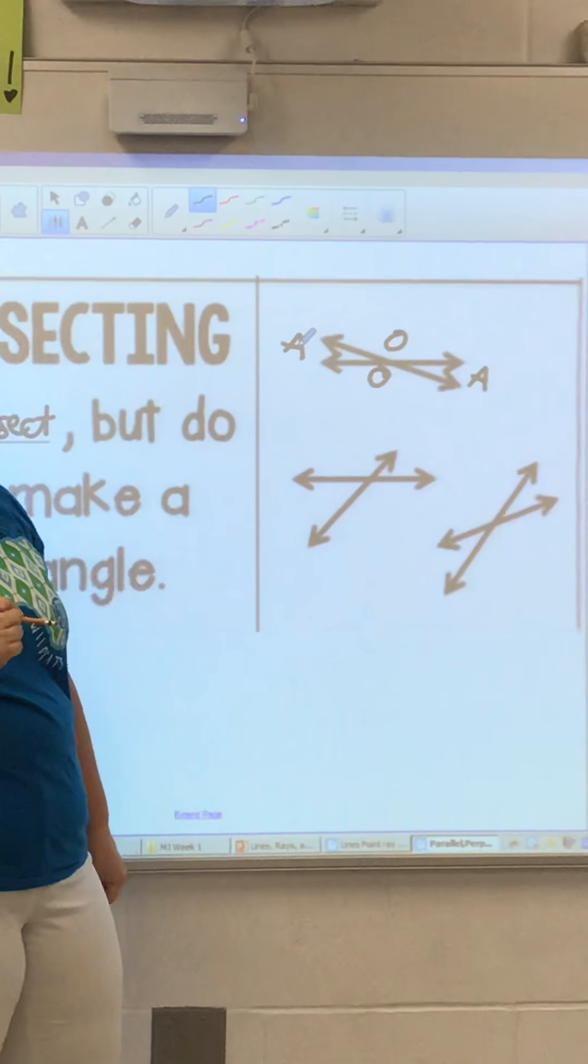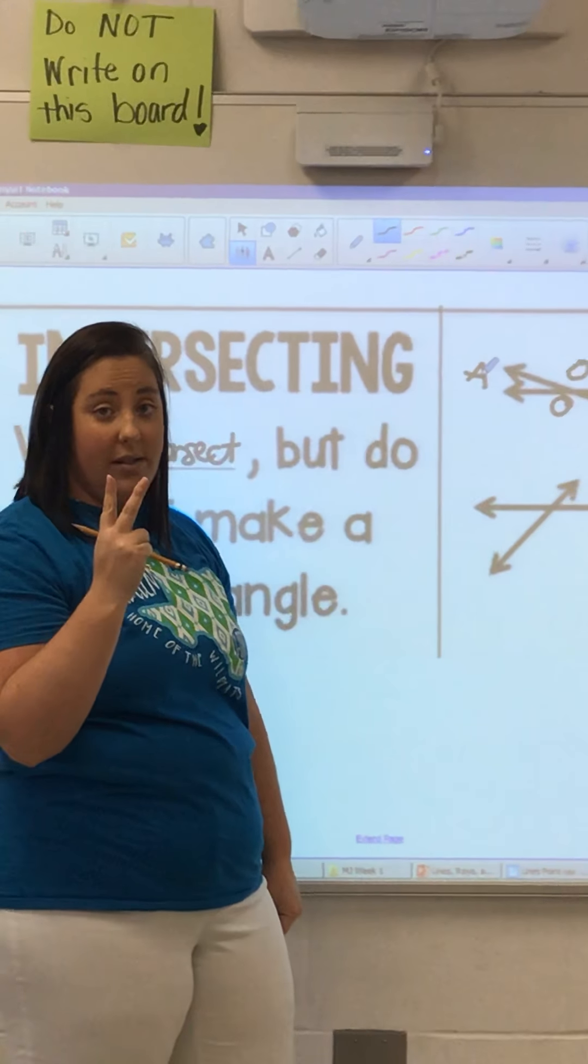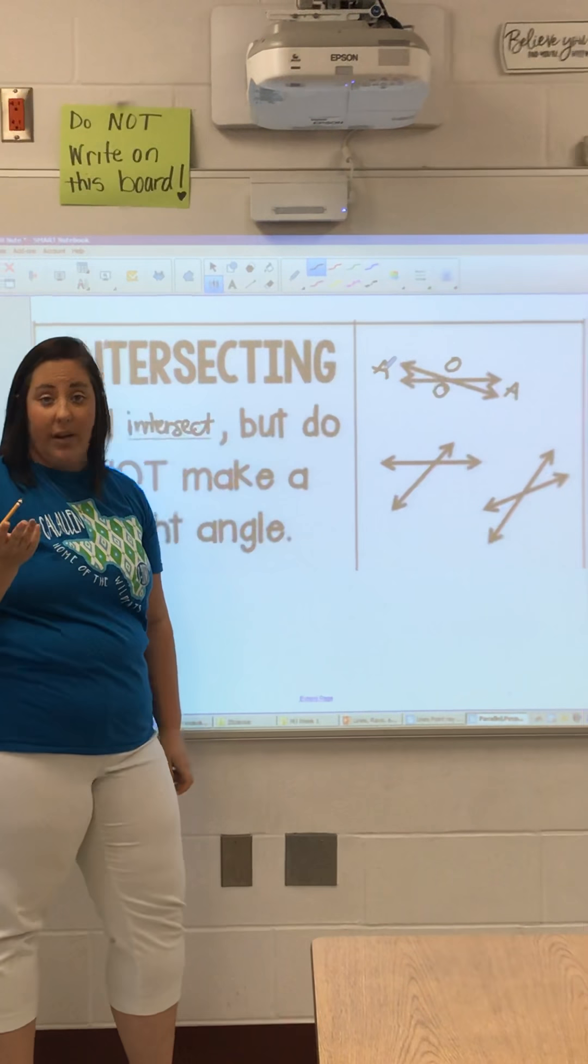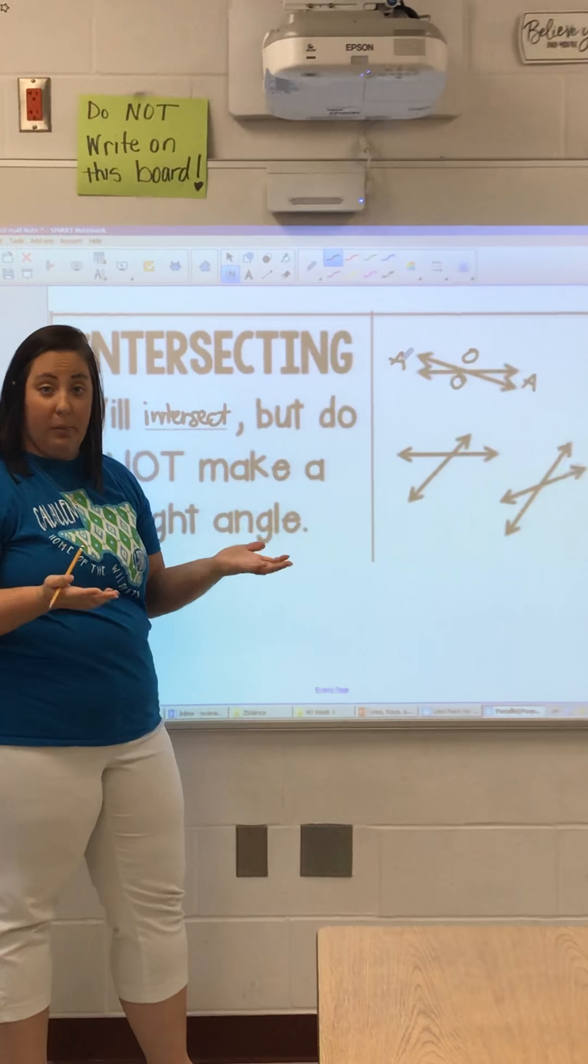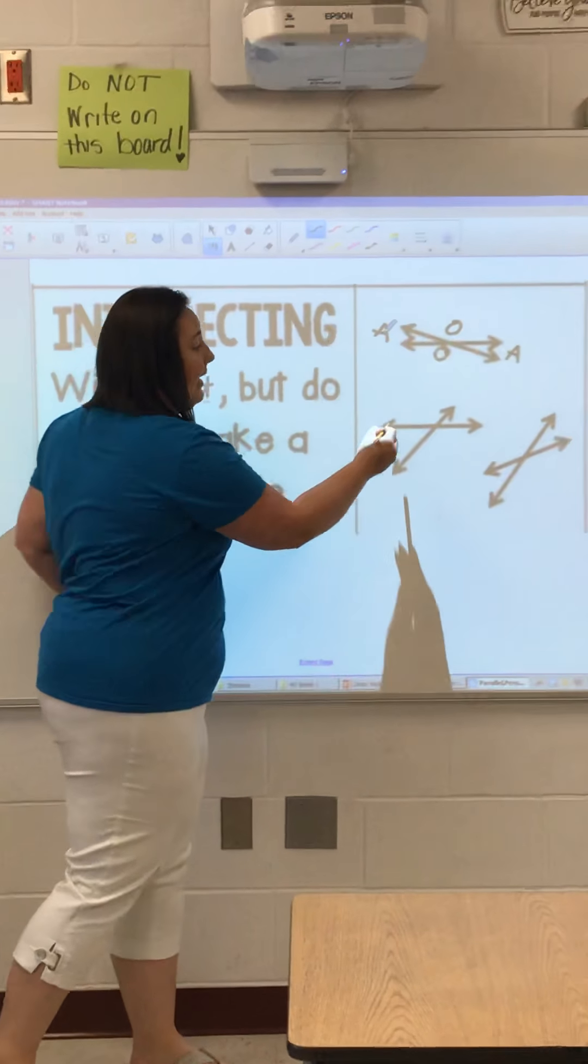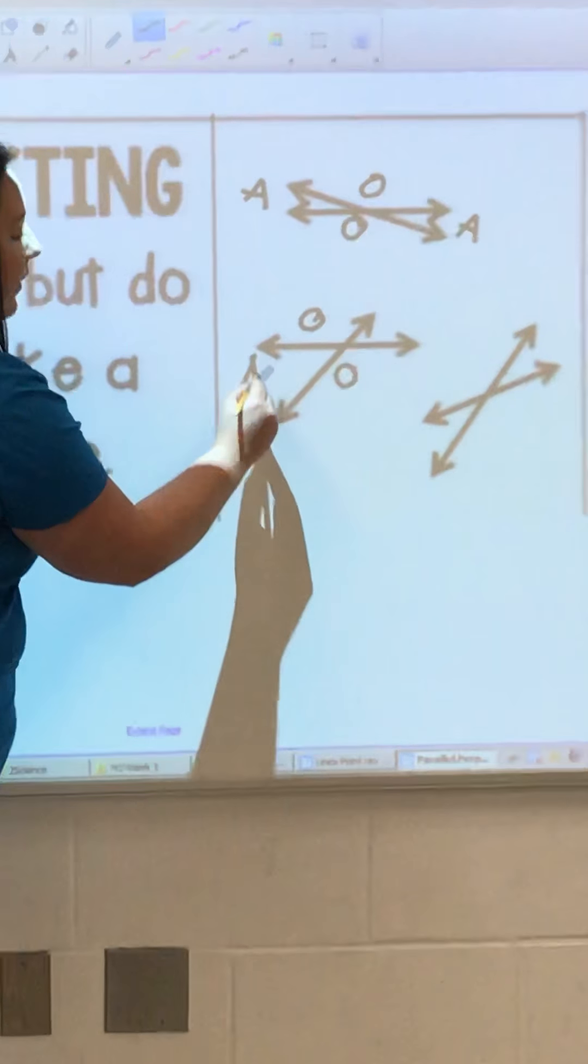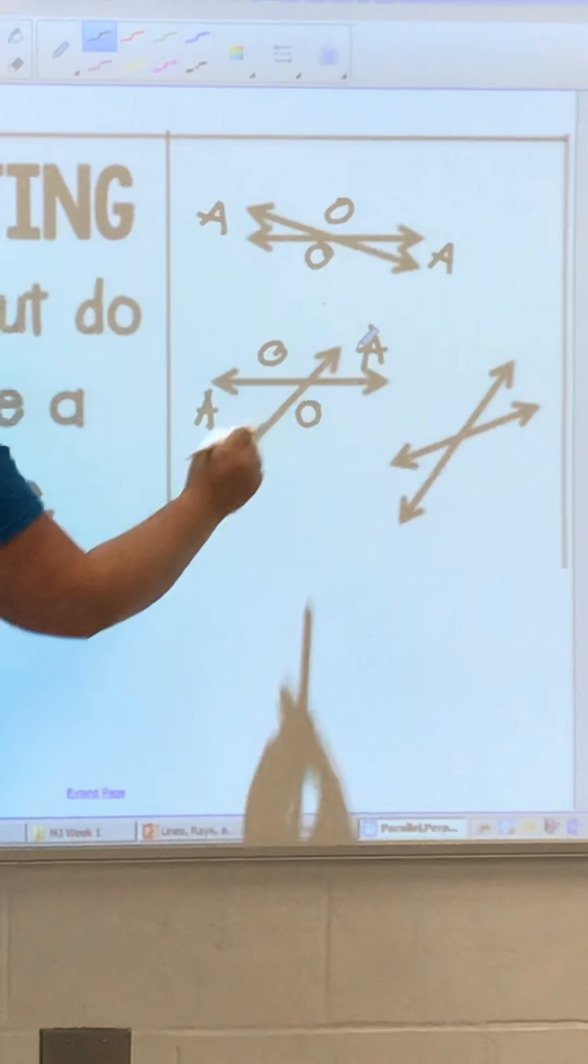So, an intersecting line will create two obtuse angles and two acute angles. And that's one way to check whether it's intersecting, or if it's perpendicular. You know if it's intersecting, if two of the angles are obtuse, and two of the angles are acute.